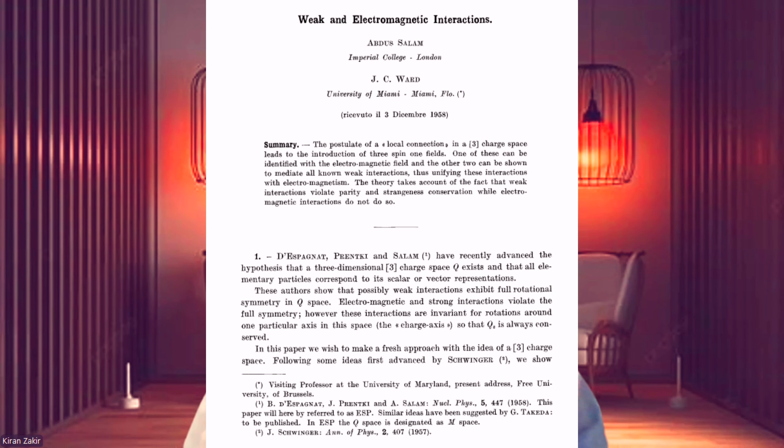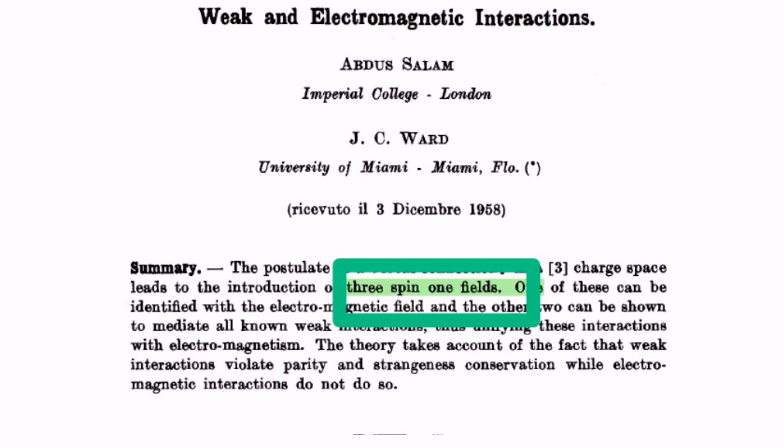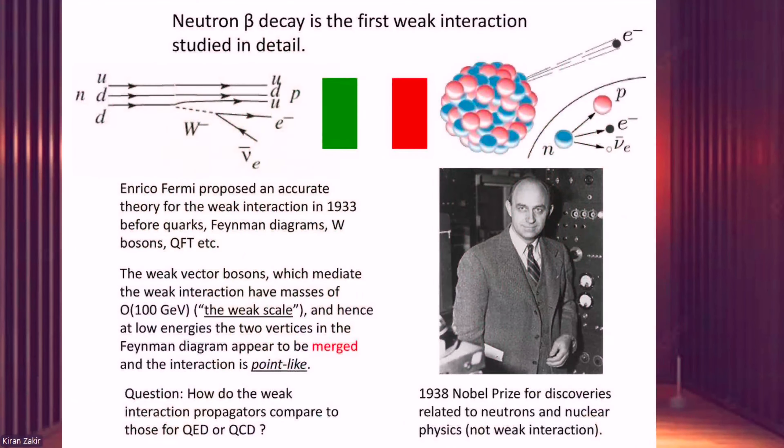The 1959 paper focused on the intricate topic of the three spin-one field, which will provide crucial context. Like all scientific research, Salam and Ward's paper did not emerge in isolation — it built on the foundational work of others, such as the development of quantum electrodynamics and the study of weak interactions. Key contributions came from scientists like Enrico Fermi, who developed the first theory of beta decay.